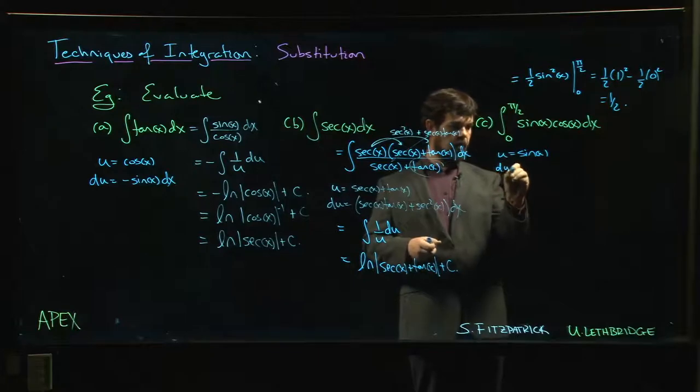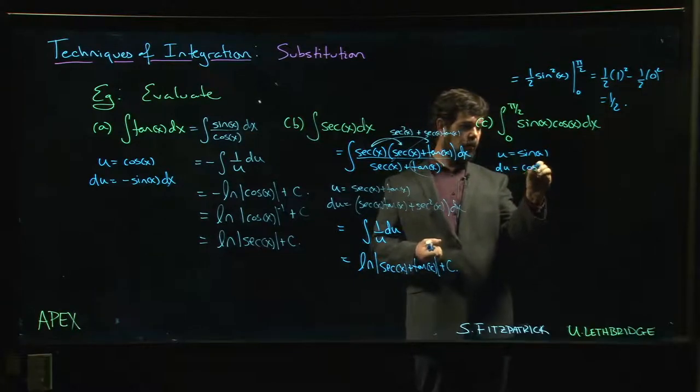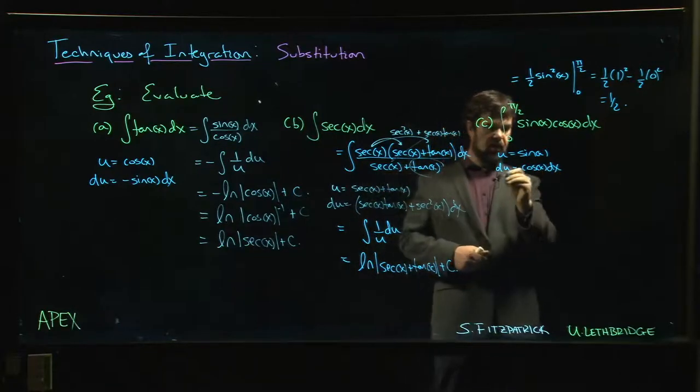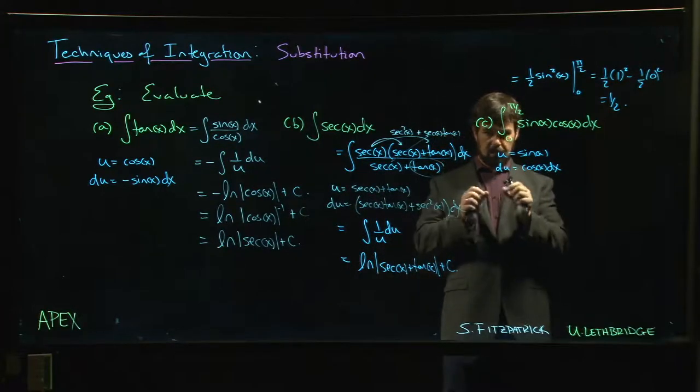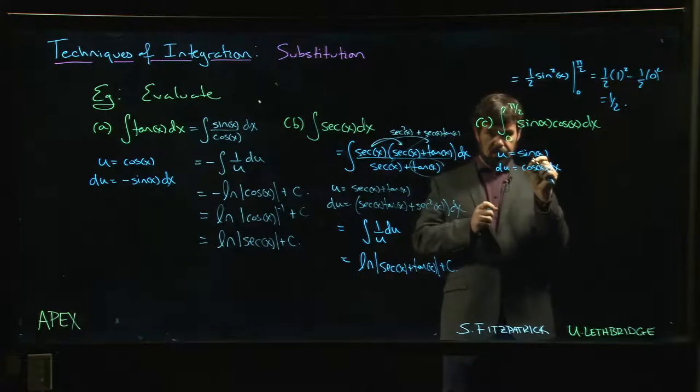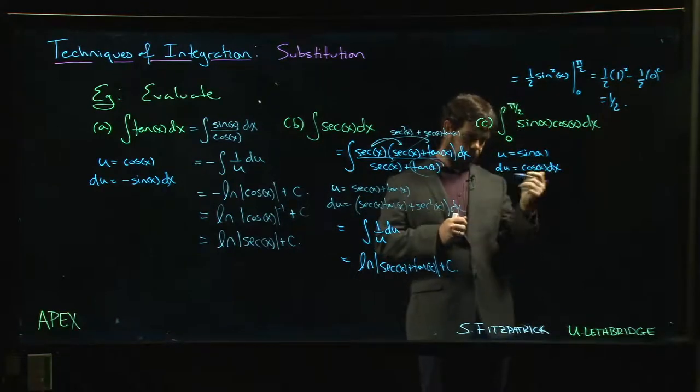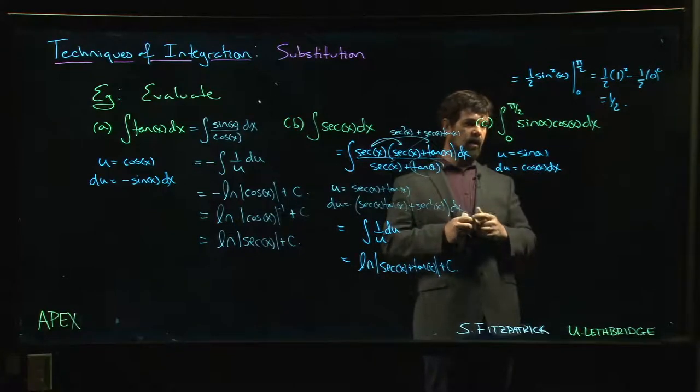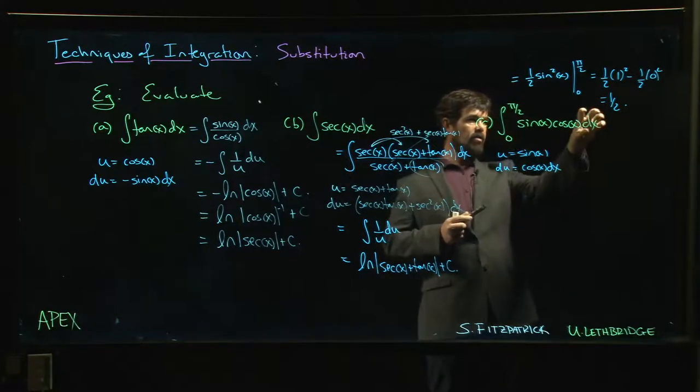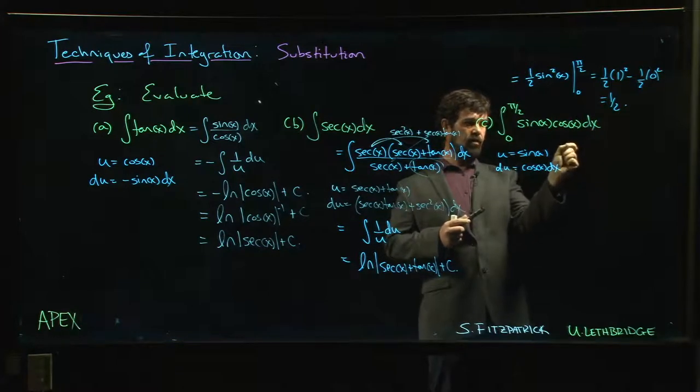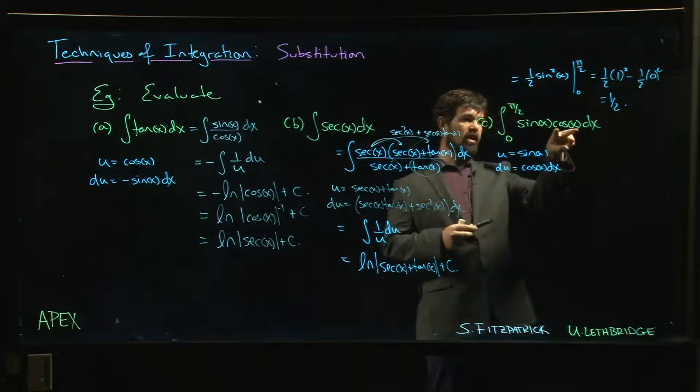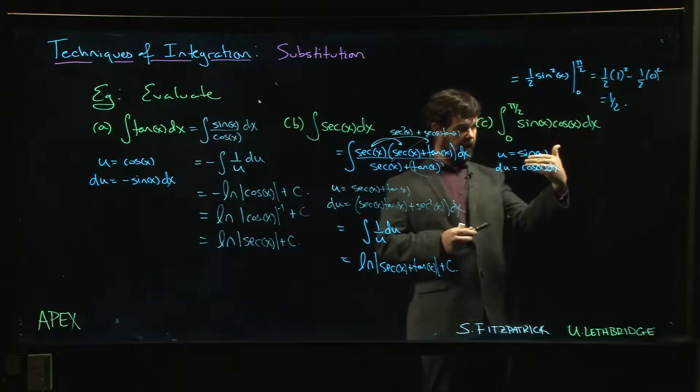So when we do u equals sine x, we do du, and we get cos x times dx. We think of the dx or the du as the infinitesimal width of those rectangles whose areas we're adding up. So we have that stretch factor by cos. Over here what you're doing is you're just doing the dx. You have this smaller width or bigger width, depending on the point of view.